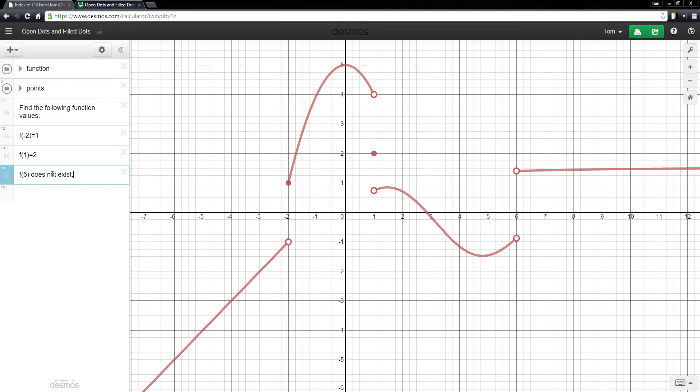Another way you can say it is that 6 is not in the domain of f, or f is undefined at 6. Any of those are fine ways to say that same expression. As far as we can tell, based on the information that we have, 6 is not in the domain here, or this function is undefined at 6.